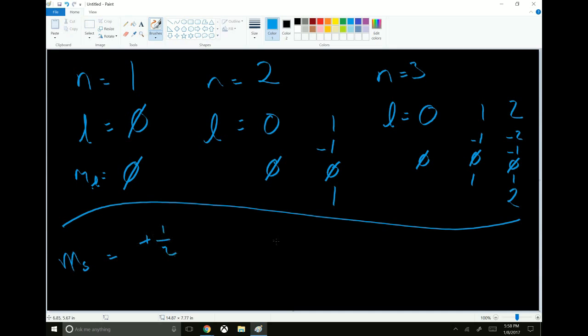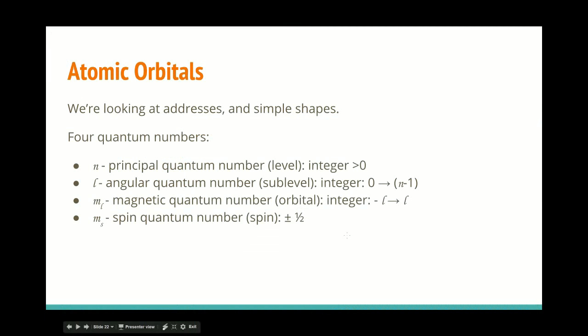And that is independent of the rest of them. M sub s equals positive one-half or negative one-half. Don't worry too much about the fact that it's a half or a minus one-half. Just realize that means that it's pointing up, or it's pointing down. So it's called spin up or spin down.